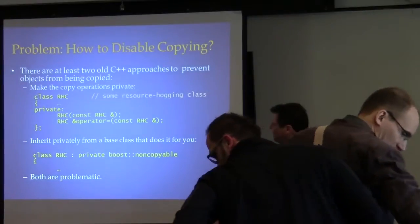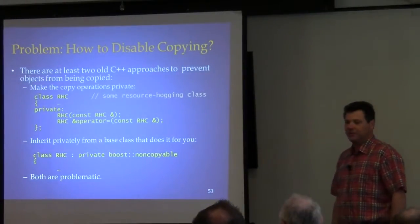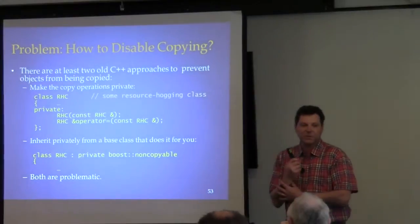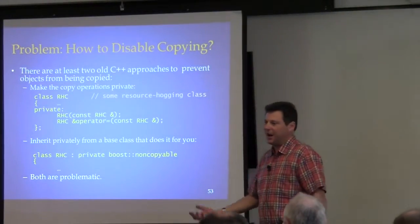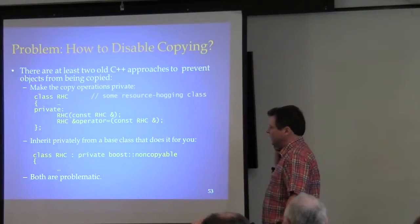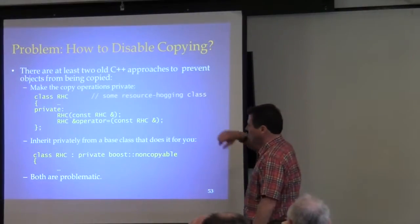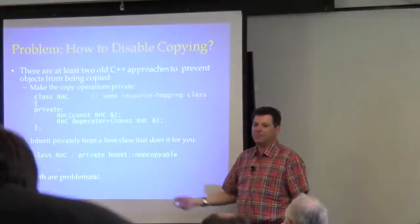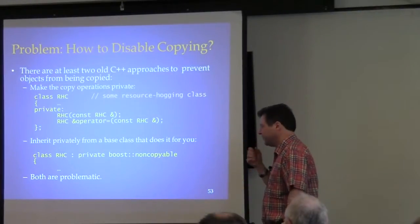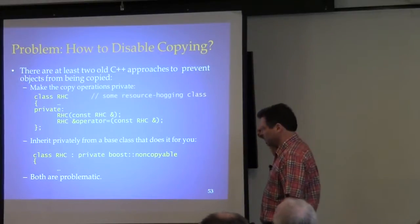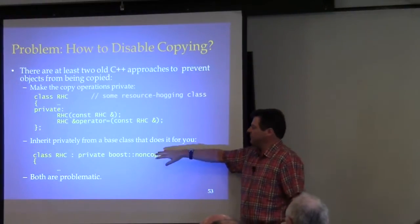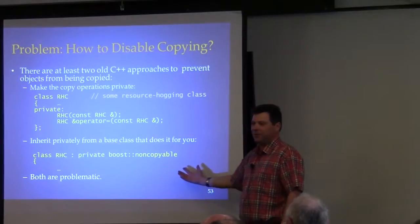One of the ancient problems with C++ is how to keep it from letting you copy something. So you have a class — how do you just disallow copying? If a client tries to make a copy of an object, it doesn't work. The two legacy approaches: number one, declare those copy operations private. When we talk about copy operations, we're talking about copy constructor and copy assignment operator — they always go together. Another way is to have a base class you can inherit from privately, because this is not an is-a relationship, it's an 'is implemented in terms of' relationship.